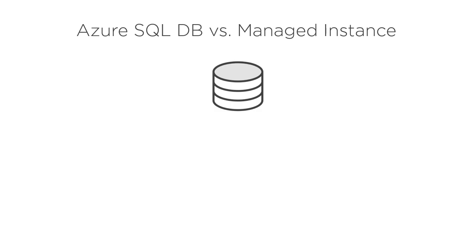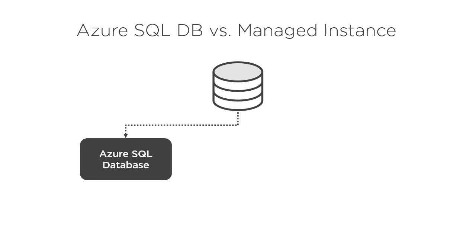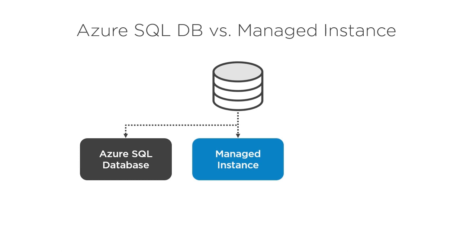Earlier, to host our SSIS DB we created Azure SQL Database, but that's not the only option — you can also create the SSIS DB in a managed instance. Broadly speaking, use Azure SQL Database when you design new cloud applications that use stable SQL Server features, whereas use the managed instance when you want to enable easy migration of existing on-premises SQL Server applications with minimal changes, as it provides near 100% compatibility with the SQL Server database engine while preserving PaaS capabilities like automatic patching and automated backups.